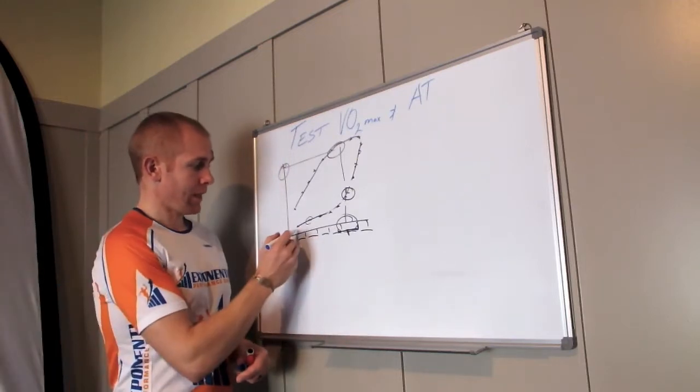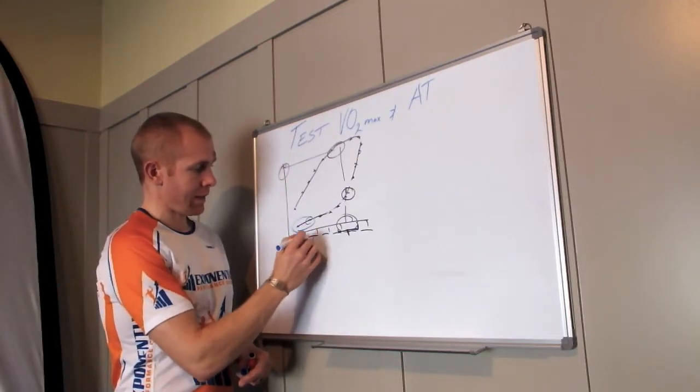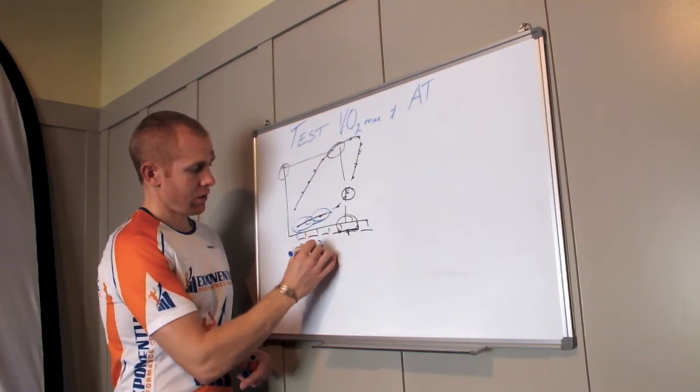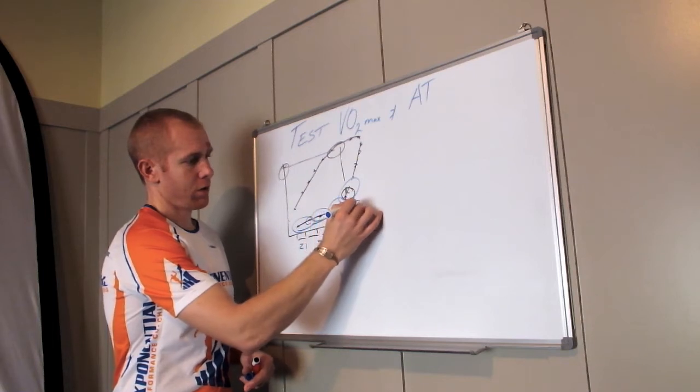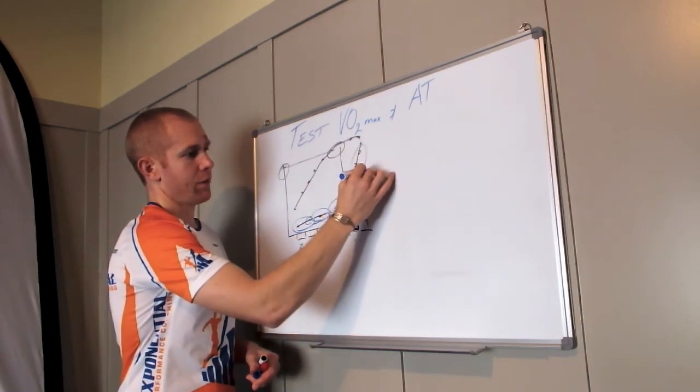What you'll end up having is zone 1 down this way, zone 2, zone 3 somewhere in here, zone 4, and then it will give you a zone 5.